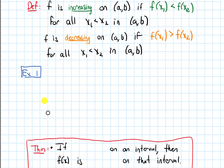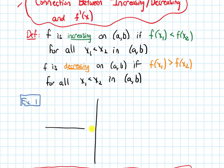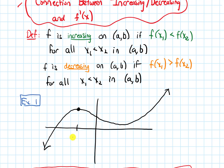Let me draw some axes and a graph. The graph curves downward and then upward, with a high point when x is negative 2 and a low point when x is 3. Looking at the first part to the left of where x is negative 2, where the function is increasing and getting bigger as I move to the right, I want to observe something about the tangent line. If I pick some arbitrary point and draw the tangent line, that tangent line has a positive slope — and even if I move the point to a different part of this increasing portion, the tangent line would still have a positive slope.